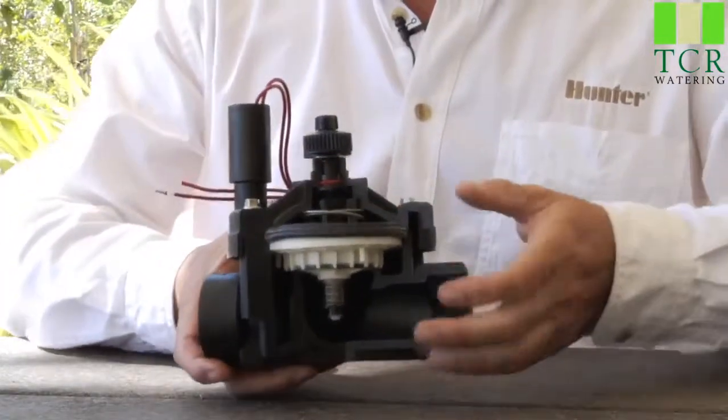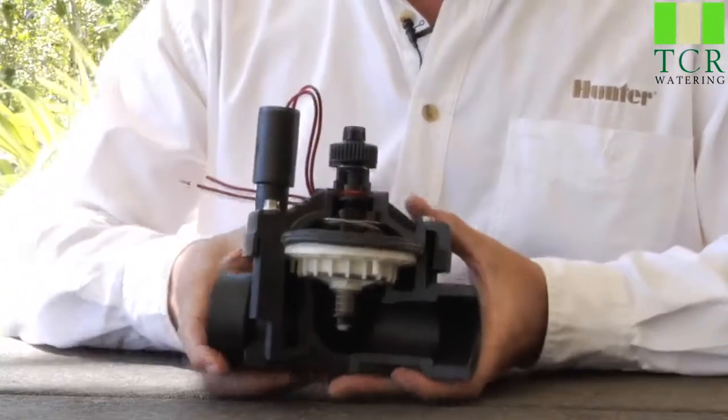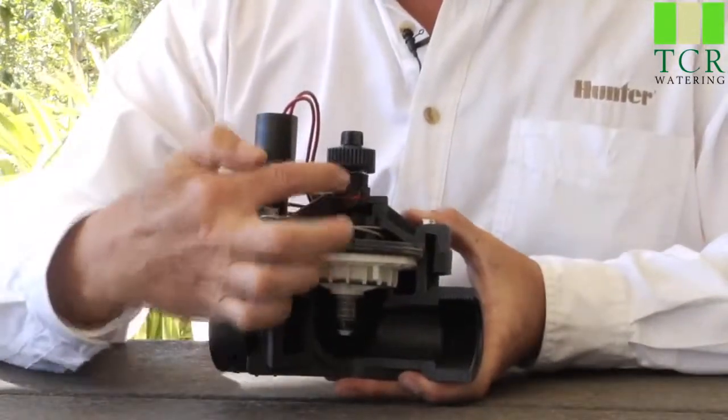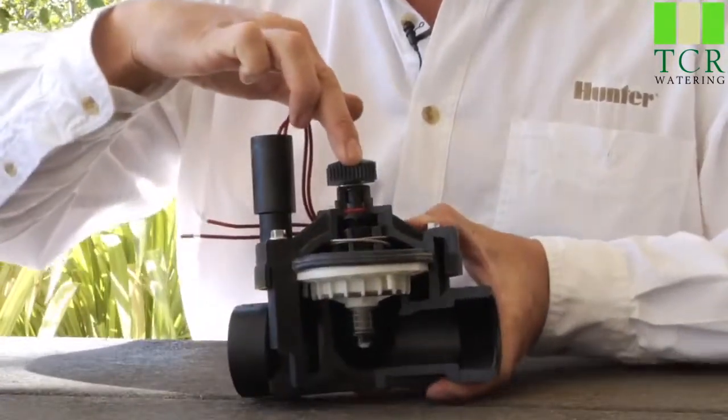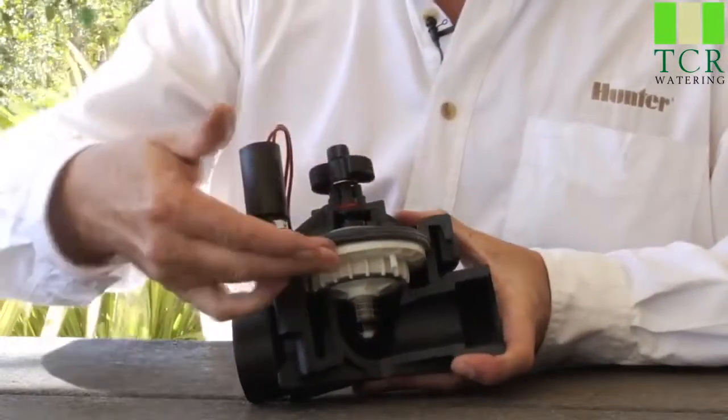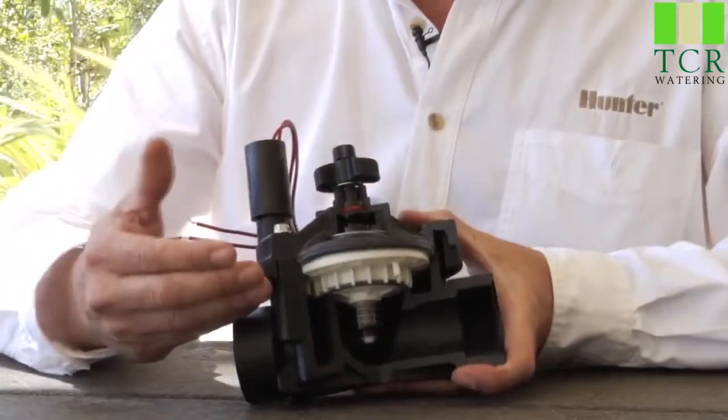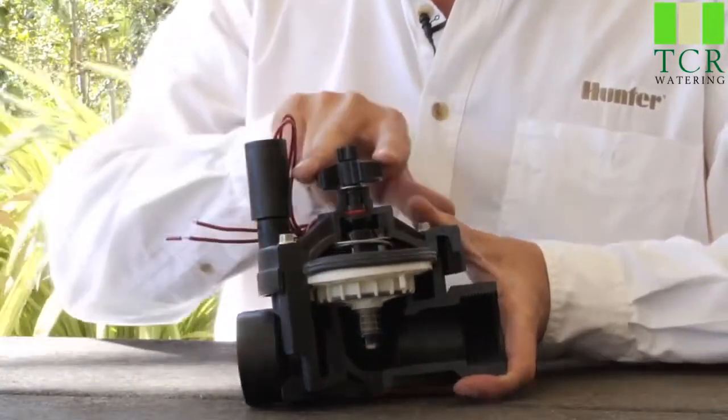In the center portion we have the working part of the valve, which is called the diaphragm, and on top of the diaphragm we have a center stem that goes up to a flow control handle. The flow control handle regulates how far the diaphragm opens and allows water to go through when the valve does open.